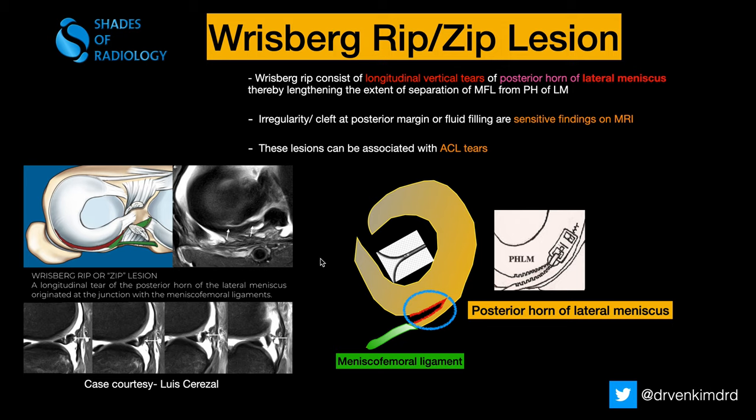In the previous video on my channel, I spoke about the ramp lesion which involves the medial meniscus, but here the Wrisberg rip or zip lesion is applicable only for the posterior horn of the lateral meniscus. It is a longitudinal vertical tear which occurs in the posterior horn of the lateral meniscus, thereby lengthening the extent of separation of the meniscofemoral ligament from the posterior horn.